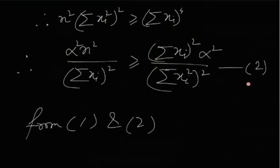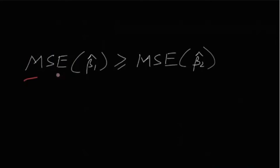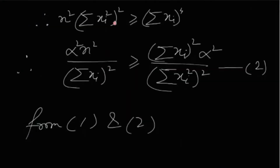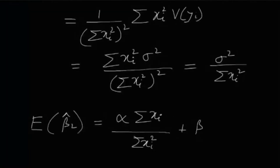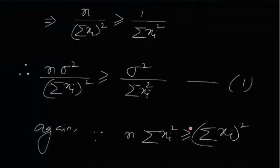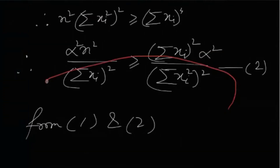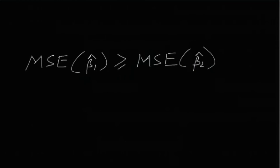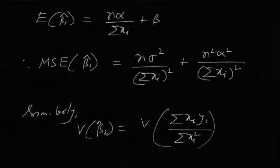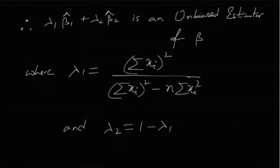Combining the two inequalities, MSE(β̂₁) ≥ MSE(β̂₂), so β̂₂ has the lower MSE between the two. The solution is complete. All that was needed was calculating the expectations and variances and applying the Cauchy-Schwarz inequality. See you next time!